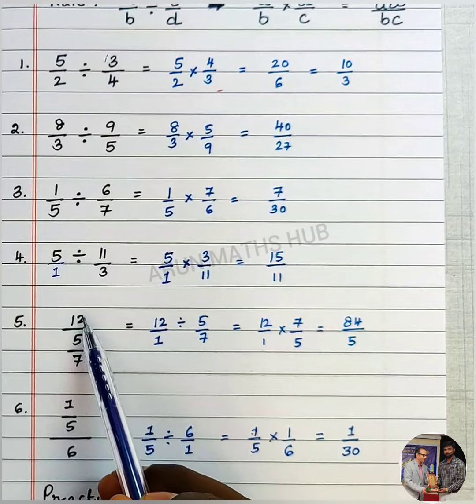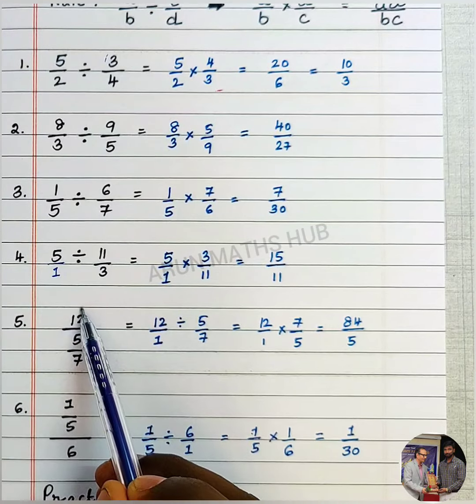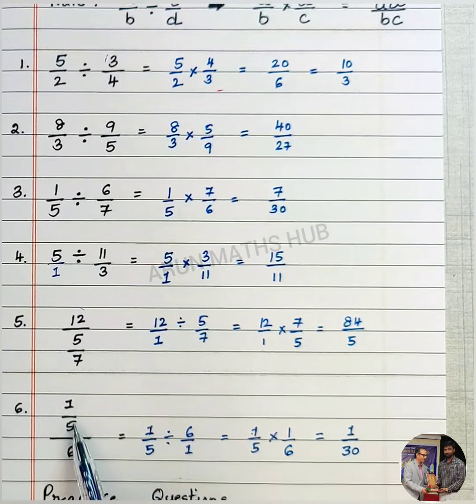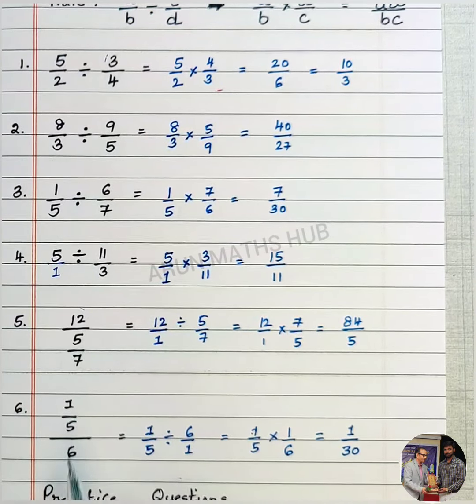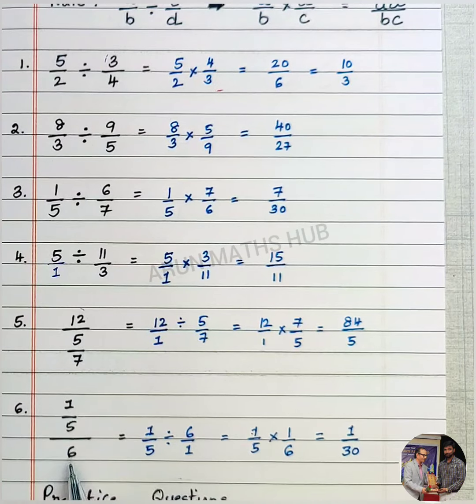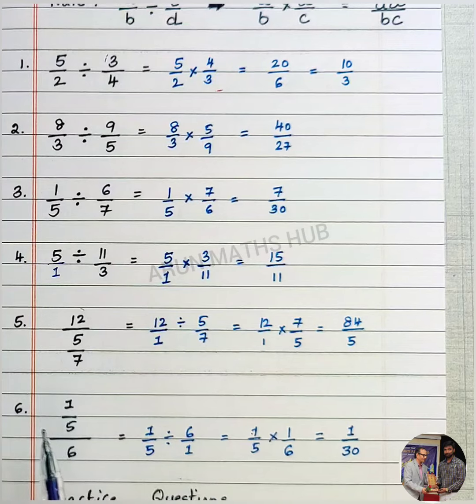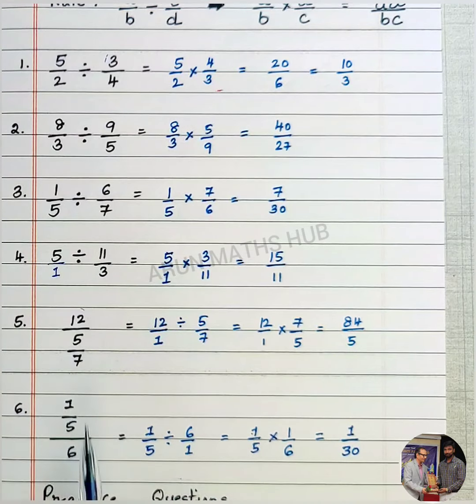Here it is not 12/5, it is 12 divided by 5/7. Here it is 1/5 divided by 6, not 1 divided by 5/6. You should be very careful where you are dividing a whole number by a fraction or a fraction divided by a whole number. Both these cases are very important. These kind of problems you come across in your textbook.